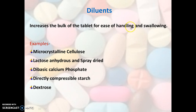Diluents are those excipients which increase the bulk of a tablet for ease of handling and swallowing when the quantity of drug is too small. Examples of diluents are microcrystalline cellulose, lactose anhydrous, spray dried lactose, dibasic calcium phosphate, directly compressible starch, and dextrose.